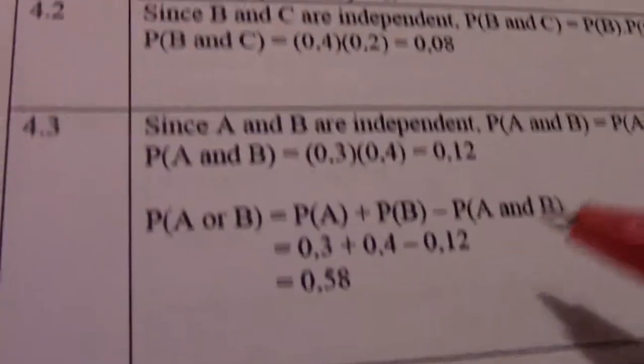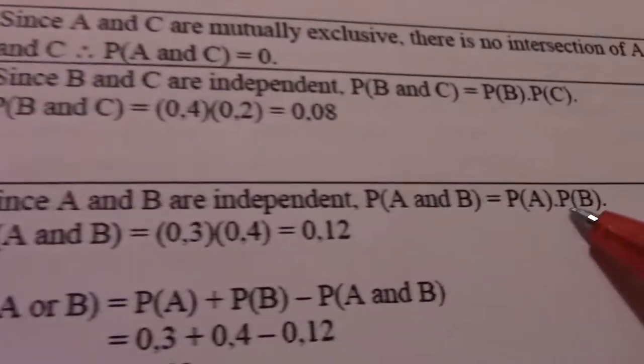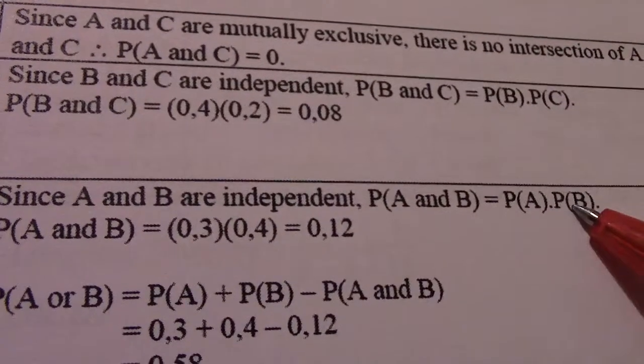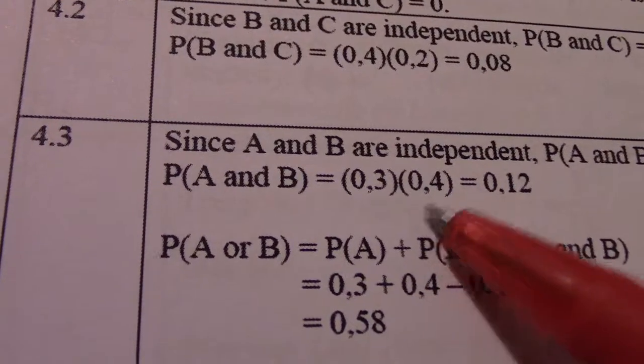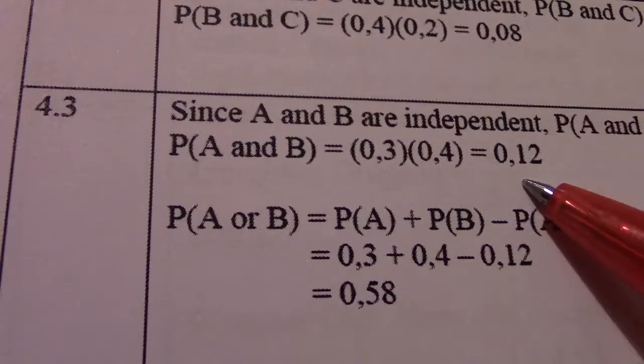So I can find it straight by multiplying. Since A and B are independent events, probability A and B equals probability A times probability B. So 0.3 times 0.4 gives me 0.12.